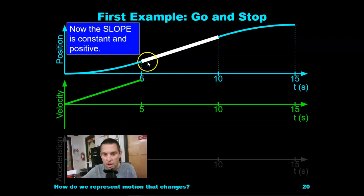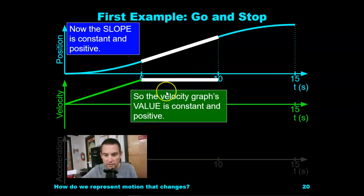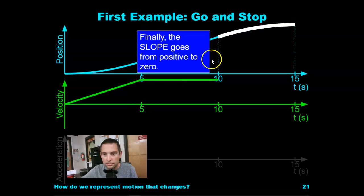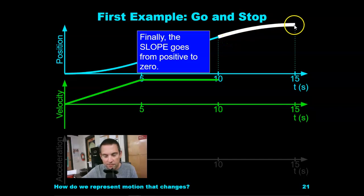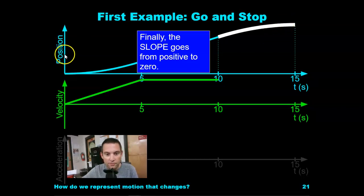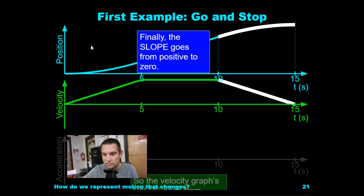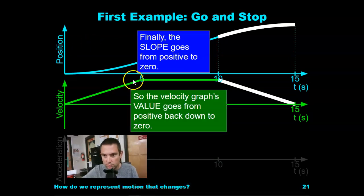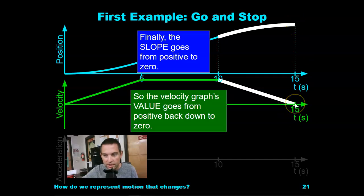Now the slope is constant and positive, so the velocity graph's value is now constant and positive. Then the slope is going from positive to zero — as we get towards the 15 second mark, the slope here is flat, meaning zero slope. If we have zero slope on a position versus time graph, what is our velocity? It's going towards zero, and at 15 seconds on a velocity versus time graph, this value is zero.